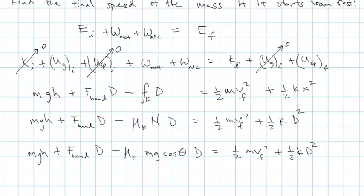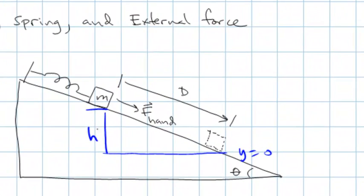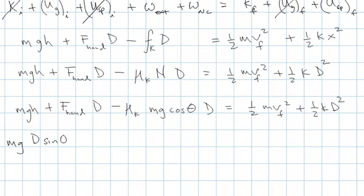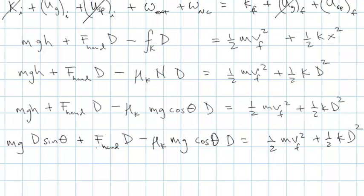We need to eliminate h. If the angle of the incline is theta with respect to the horizontal, this angle is also theta, and the hypotenuse of the triangle is capital D. So h over D equals sine theta, meaning h equals D sine theta. Plugging that in, we now know everything except v_final, and we do the algebra and we're done.